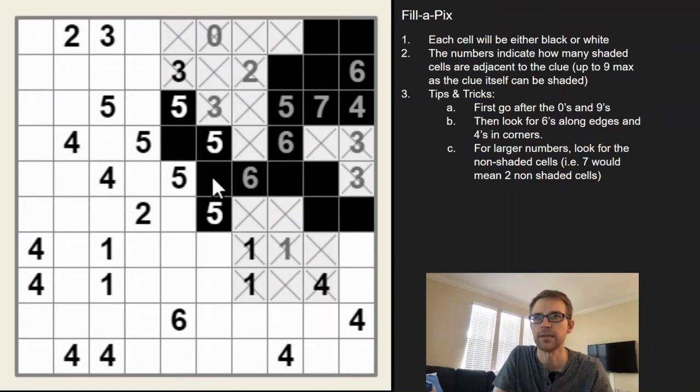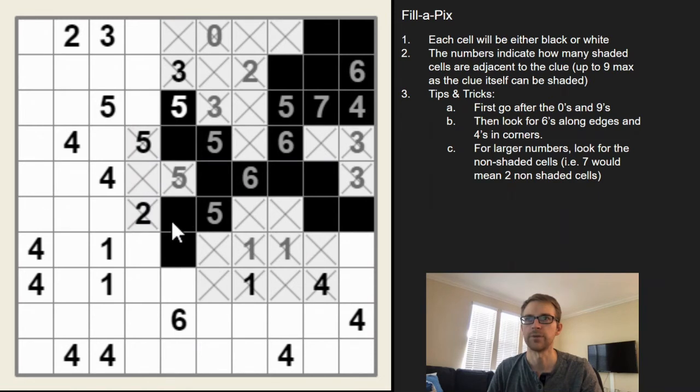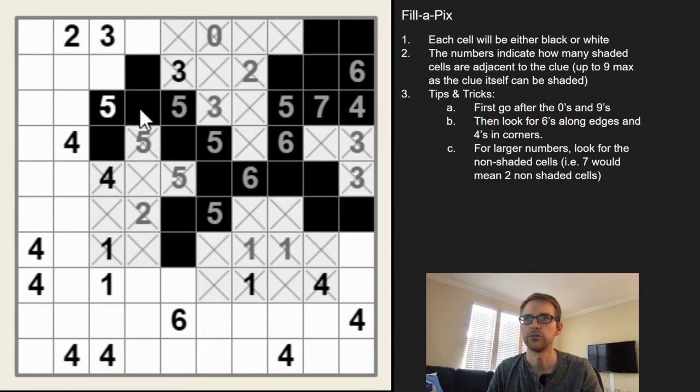This five looks to be solved, right? That's that pentomino, the W shape, so we can X that one out. This one solved, X those. This five has the four unshaded, so we can do that W shape again. This five solved as that little pentomino. Fives are easy because you can visualize the pentomino pretty quickly. The two solved